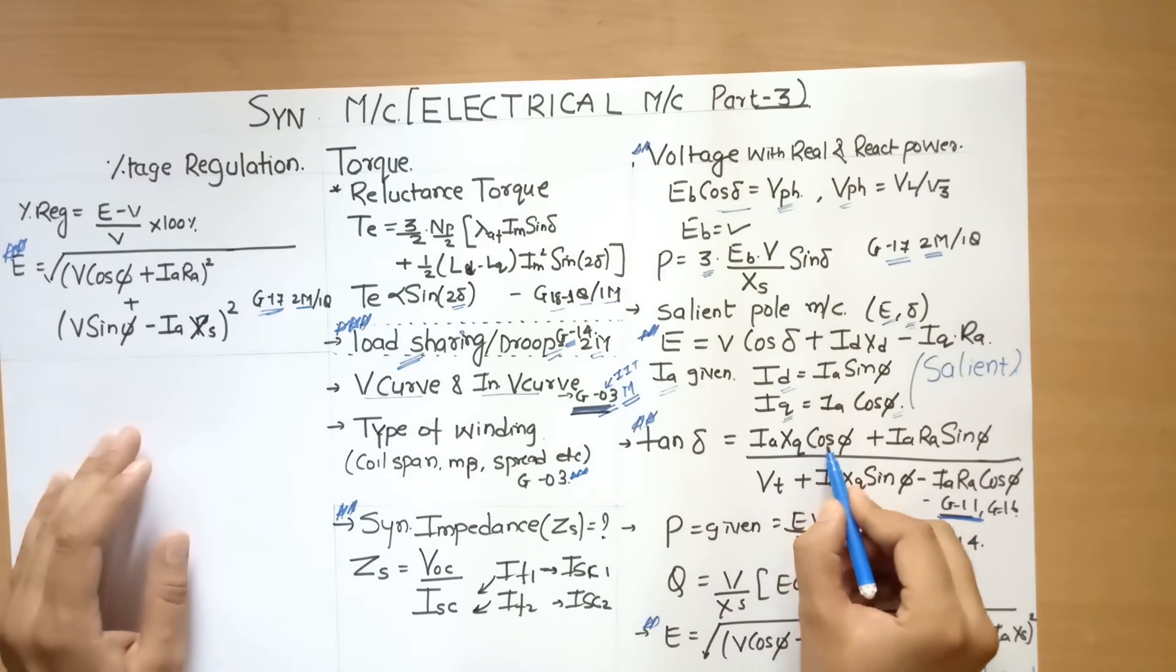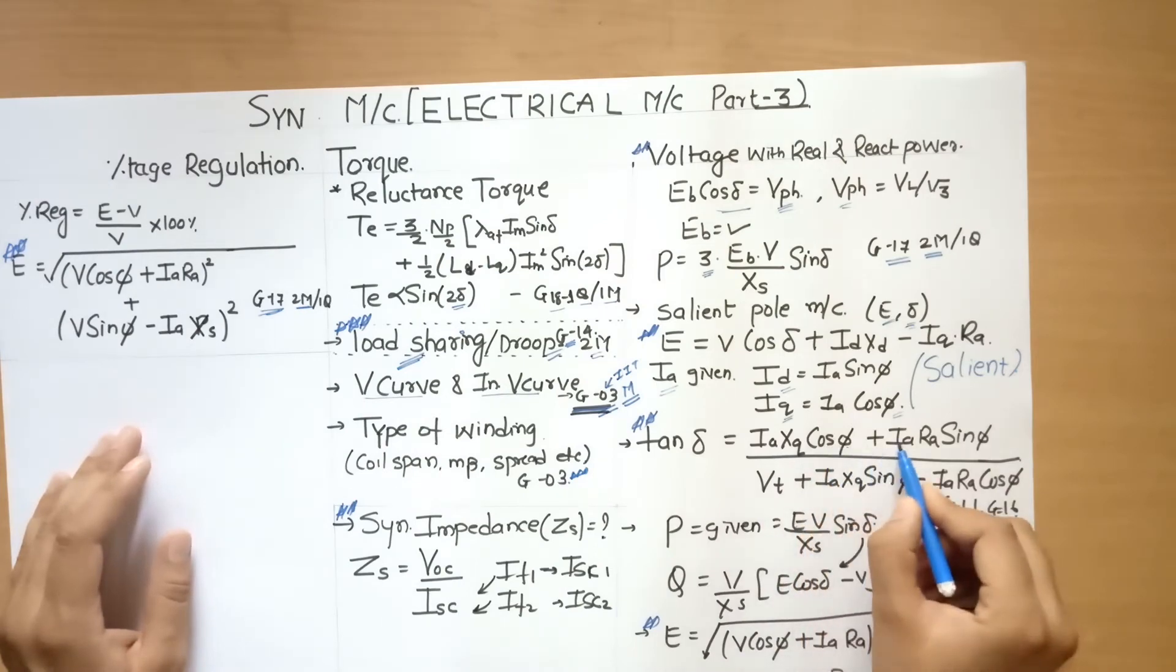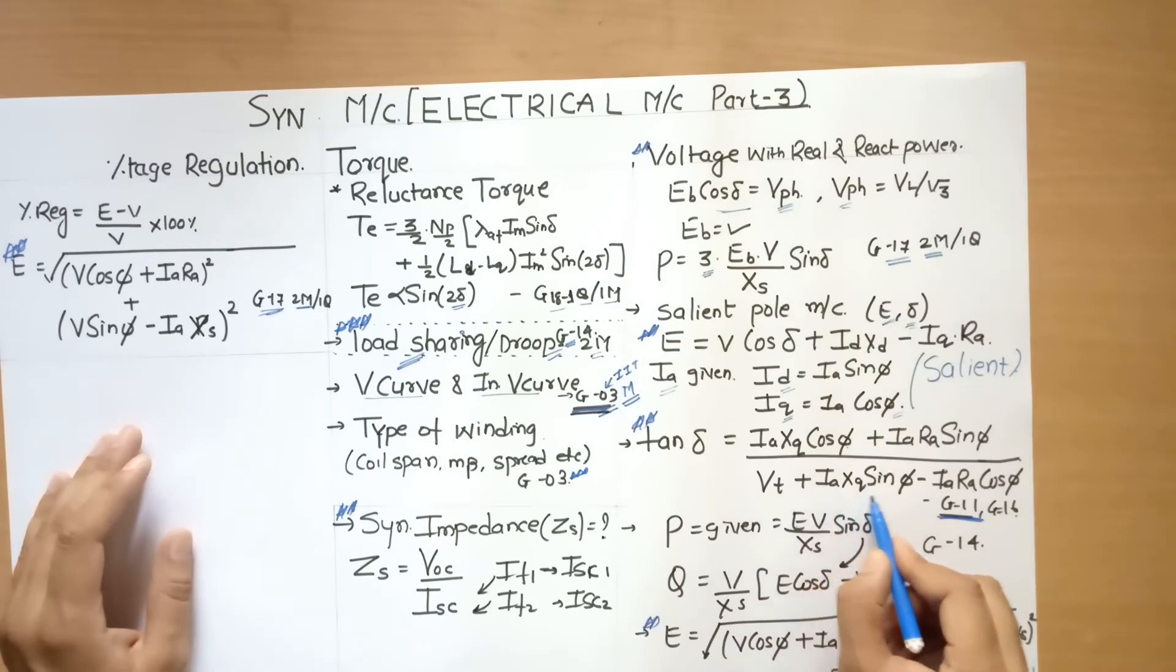You have to remember this equation. This is very important equation: tan delta equal to (Ia Xq cos phi plus Ia Ra sin phi) divided by (Vt plus Ia Xq sin phi minus Ia Ra cos phi).